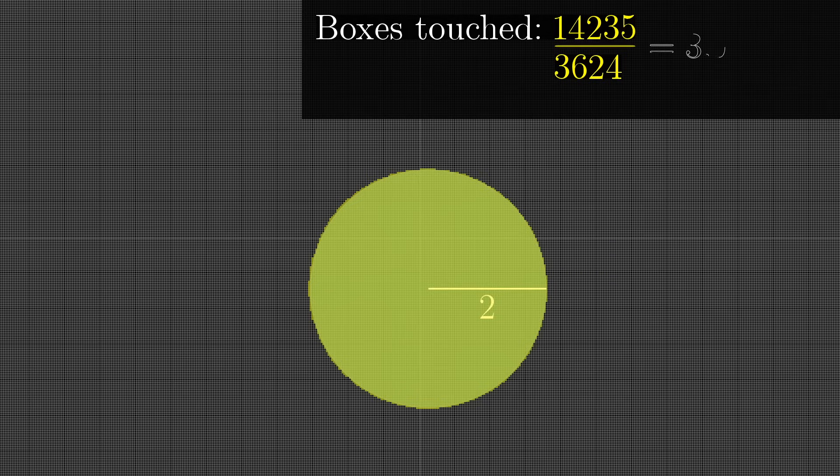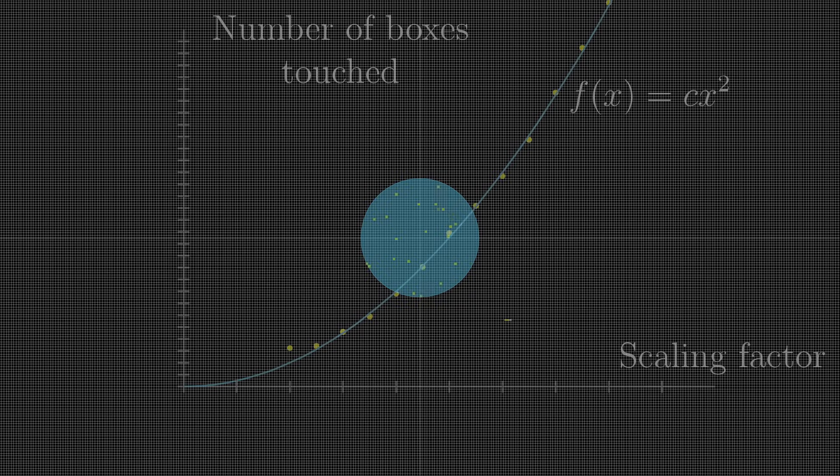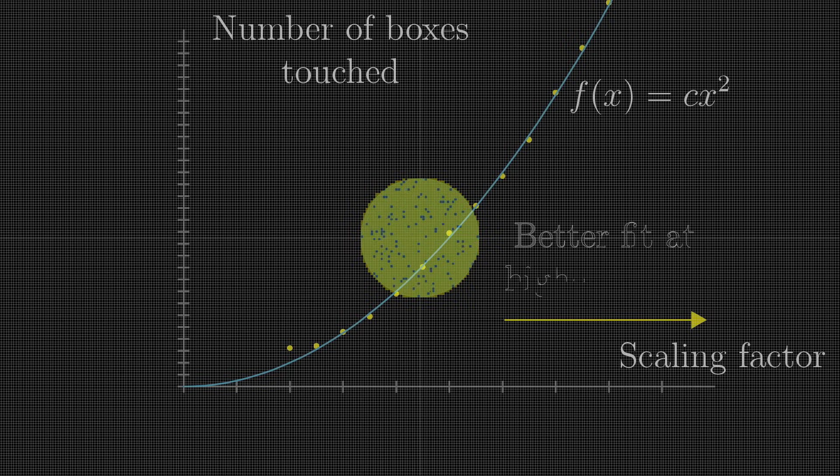I'll admit though that when I was animating this I was surprised by just how slowly this value converges to four. Here's one way to think about this. If you were to plot the scaling factor compared to the number of boxes that the scaled disk touches, your data should very closely fit a perfect parabola, since the number of boxes touched is roughly proportional to the square of the scaling factor. For larger and larger scaling values, which is actually equivalent to just looking at a finer grid, that data is going to more perfectly fit that parabola.